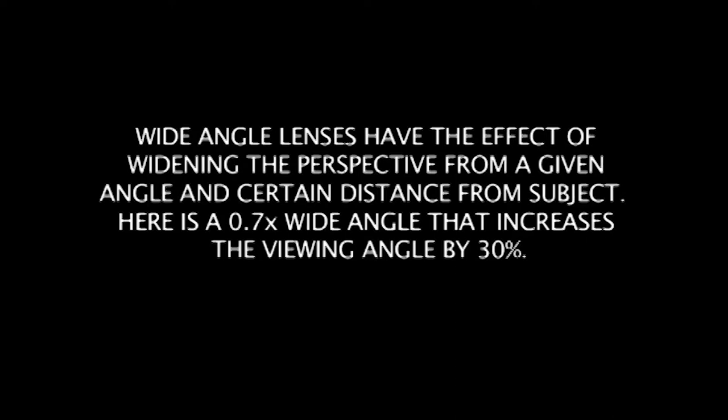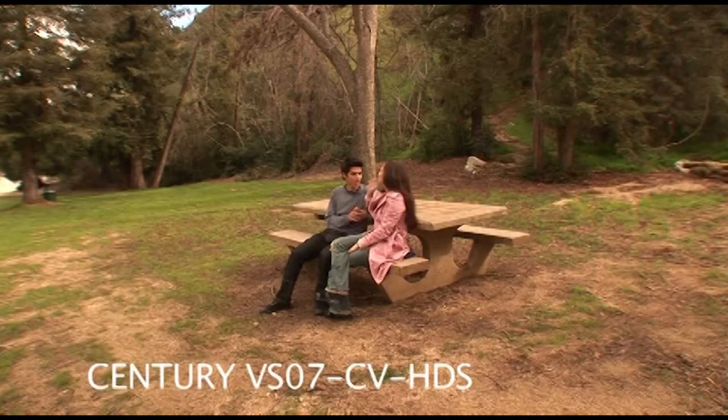This is an example of a 0.7 wide angle that increases the viewing angle by 30%. This is not actually a lens — it's a converter. It converts the existing lens attached to the camera and makes it 30% wider. It's called a 0.7x.